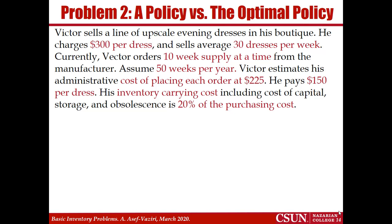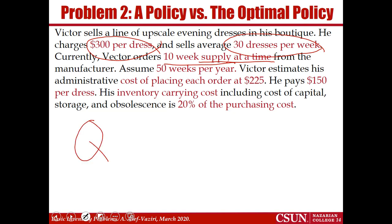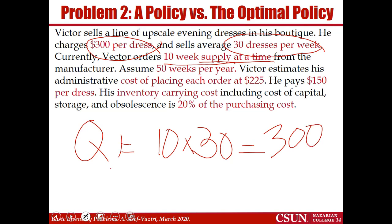Let's go through the second problem on economic order quantity. We sell a product; the sales price is $300 per unit. The demand is 30 units of product per week. Each time that we order, we order an amount which is enough for 10 weeks of demand — 10 weeks of supply — because we assume throughput is equal to demand, and therefore supply is equal to demand. Each time we order 10 weeks multiplied by 30, which is demand per week, so each time we order 300 units. That is Q.